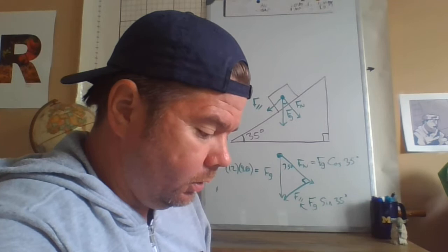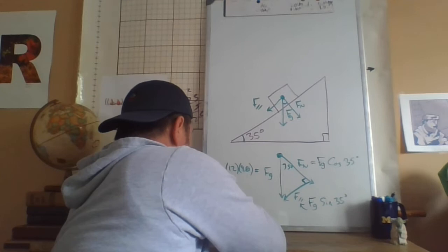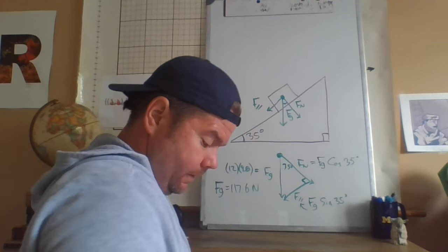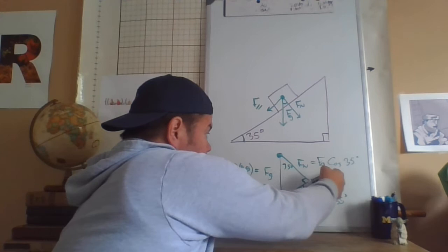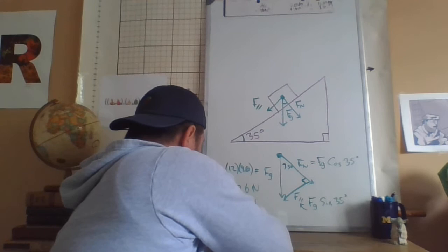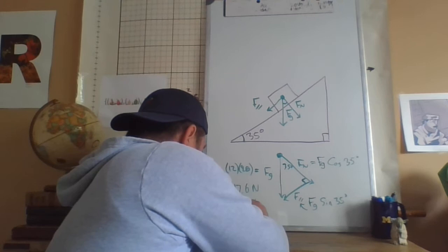And we can compute these numbers relatively in a straightforward way because I have a TI-84 or TI-83 plus calculator. So let's just knock this out. 12 times 9.8 is 117.6. So the force of gravity equals 117.6 newtons. If I multiply that by the cosine of 35, 96.3. So the force normal is 96.3 newtons. And the force parallel, 117.6 times sine of 35, 67.5.